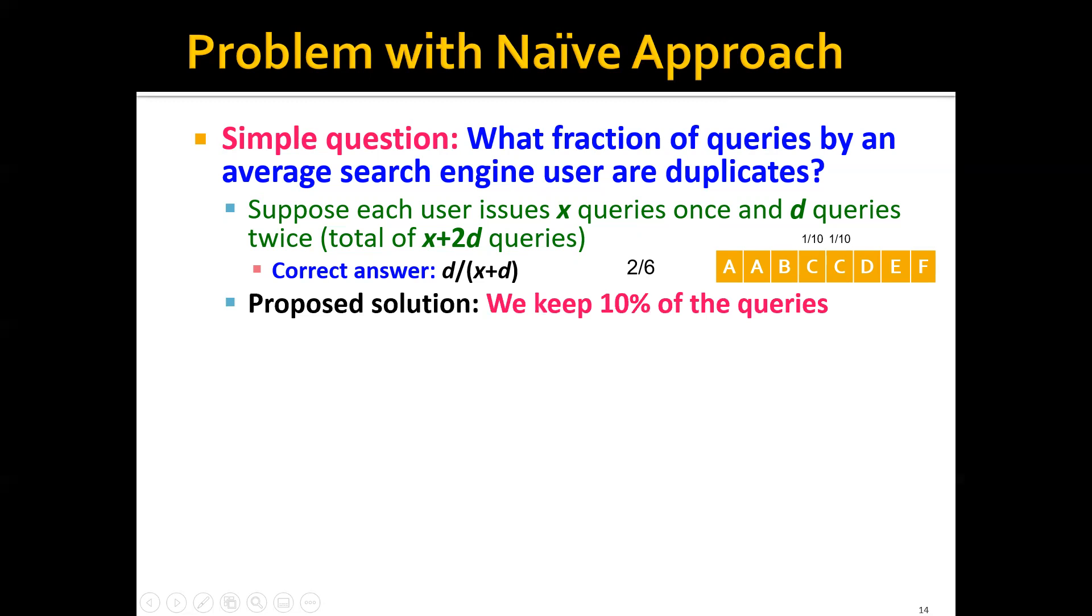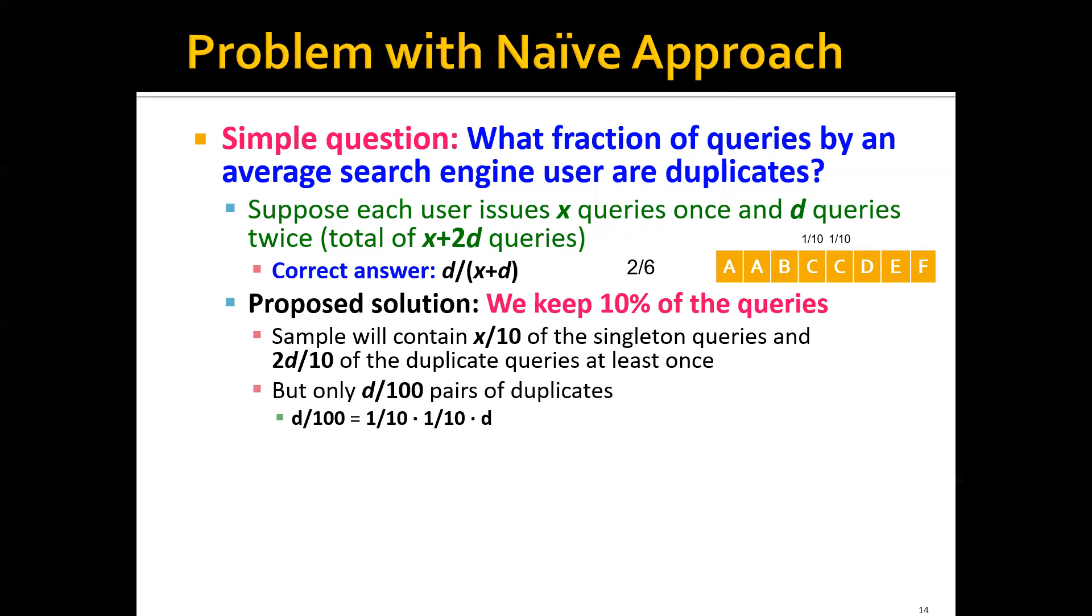Remember that our proposed naive solution is to keep only 10% of the queries. So the sample will contain x/10 of the singleton queries and 2d/10 of the duplicate queries at least once. But if you look at the pairs of duplicates, this approach actually only keeps d/100 pairs of the duplicates, which is too small a number.